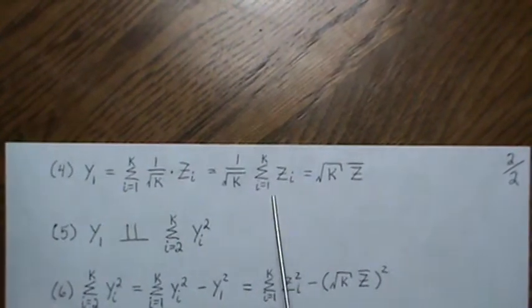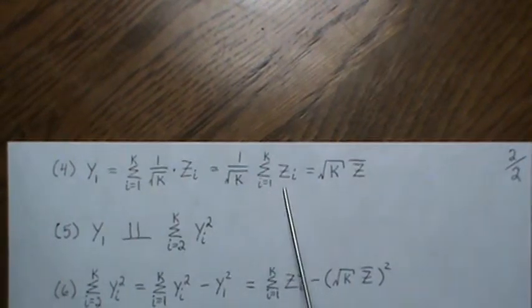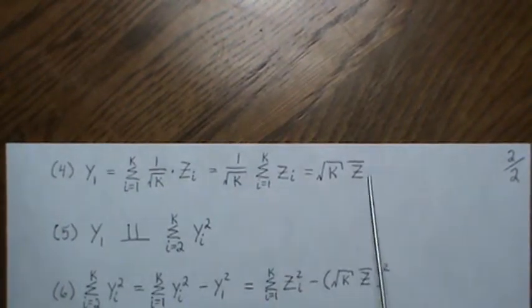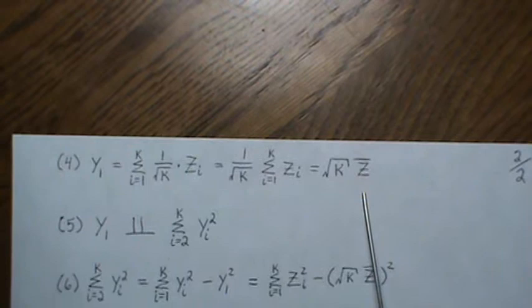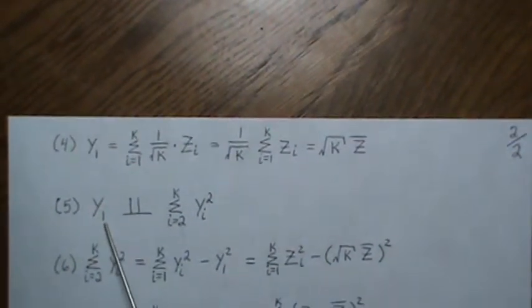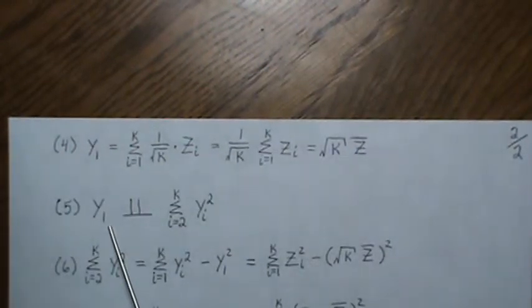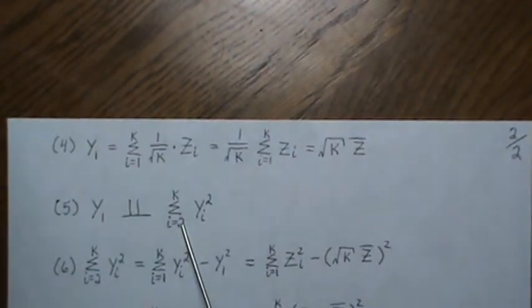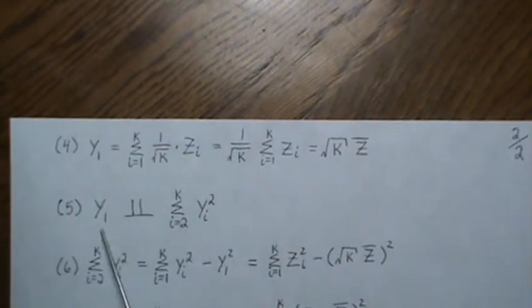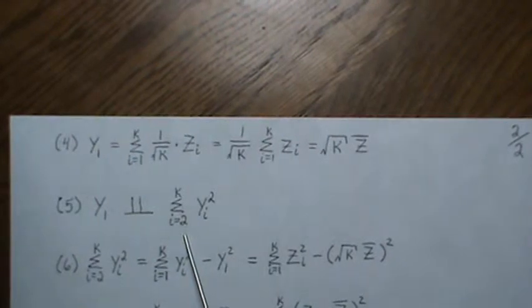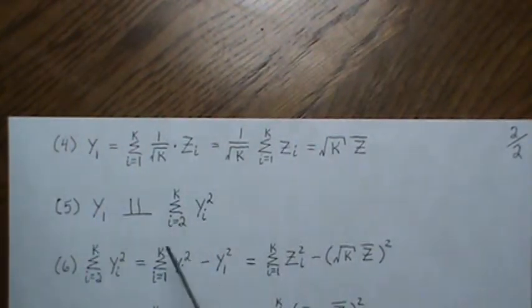Bringing out the factor, y₁ = √k · z̄. It's pretty obvious that since the yᵢ's are independent, y₁ is independent of the remaining k−1 values y₂, …, yₖ. Since y₁ doesn't appear in those remaining terms, they are clearly independent. Let's establish that, and then look at the sum from 2 to k.